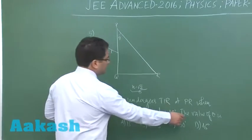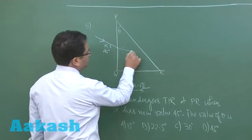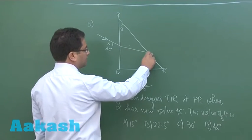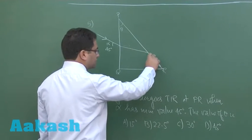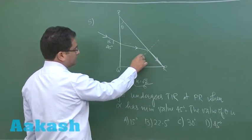So on the basis of that we need to calculate theta. When alpha is 45 degrees, the situation would be something like this: rarer to denser, it would bend towards the normal. It's a minimum condition so then the light would be going critically. This is the normal.